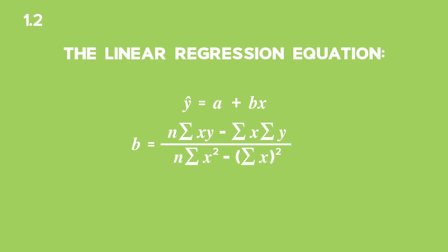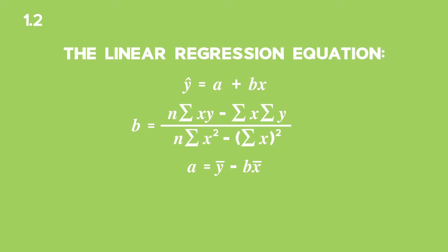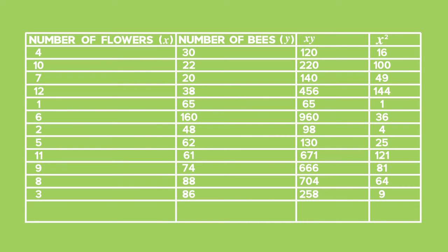For 1.2, since the instruction is to calculate the equation of the least squares regression line by hand, we will use the formulae we saw earlier to calculate the values of a and b. We set up a table to calculate the values of b and a. x represents the number of flowers and y is the number of bees that visited the flowers. The third column shows the product of the x and y values, and the fourth column shows the x-squared values. The last row shows the sums of each of the four columns.